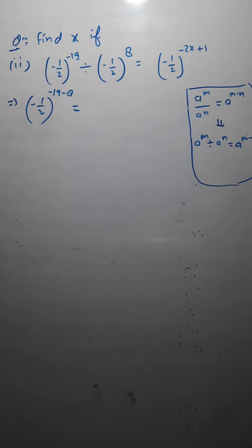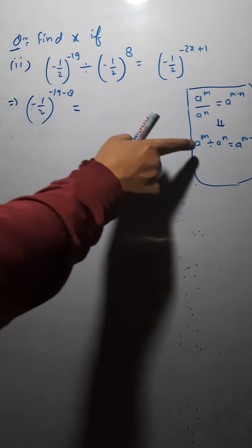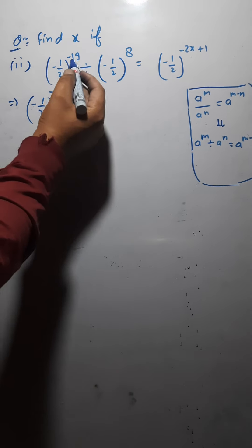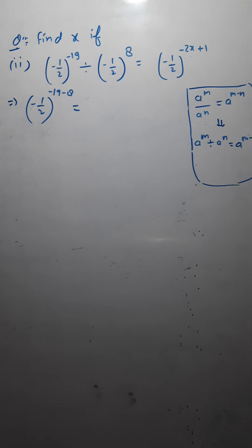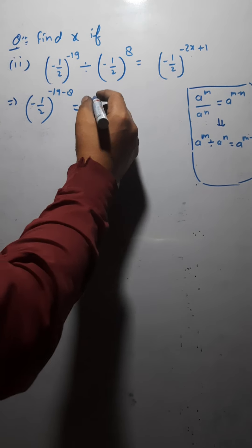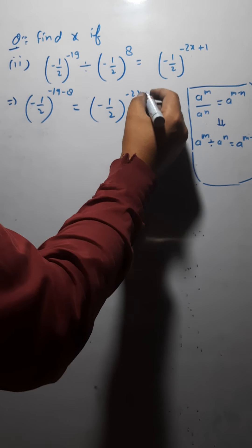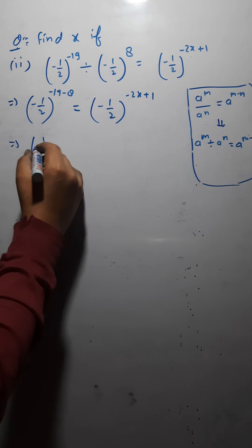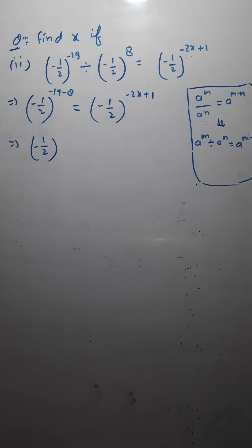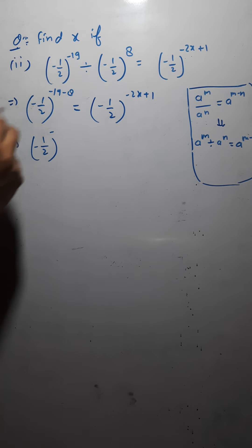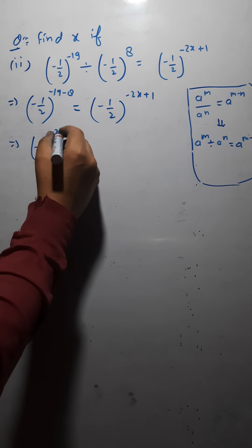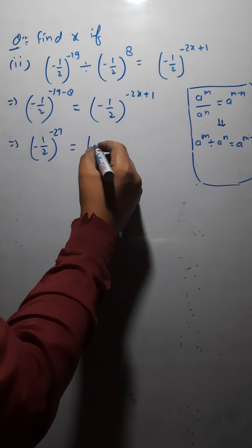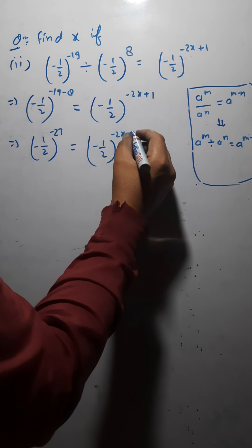So we can write (minus 1/2) raised to the power minus 19 minus 8. Minus and minus are added and the sign is negative, so 19 and 8 gives 27 — it becomes minus 27. This equals (minus 1/2) raised to the power minus 2x plus 1.